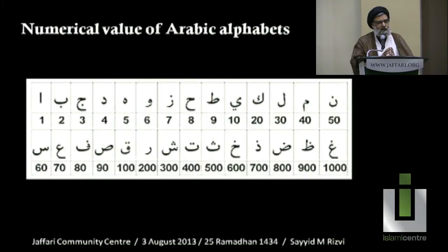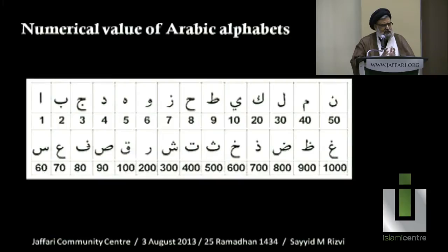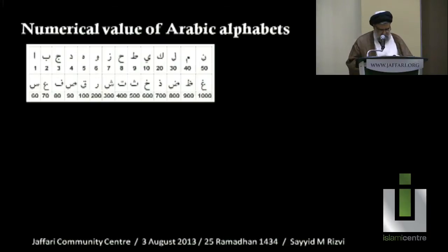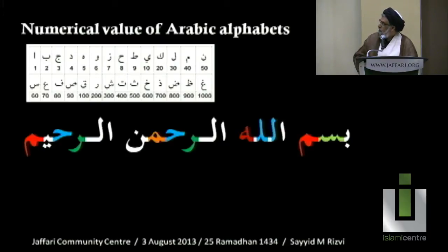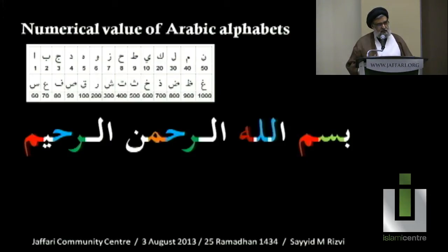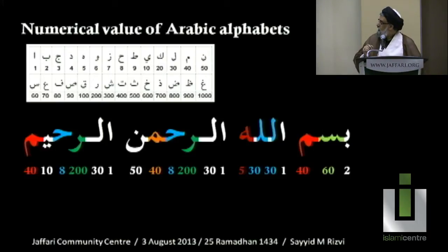For example, we see the usage of the number 786, especially among Muslims who are from the South Asian background. We say this stands for Bismillah ar-Rahman ar-Rahim. It is actually the equivalent of the numerical value of the alphabets in Bismillah ar-Rahman ar-Rahim. If we go to the second slide, you will see that each of these alphabets, if you look at the chart above and give a number to it and calculate it, the total will be 786.